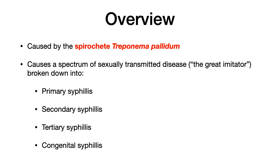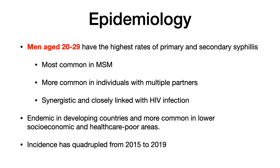Syphilis can be broken down into four different subtypes: primary syphilis, secondary syphilis, tertiary syphilis, and congenital syphilis. Men aged 20 to 29 have the highest rates of primary and secondary syphilis. Key risk factors to watch for on your exam include a male who has sex with other males, a patient with multiple sexual partners, and a history of HIV infection. Syphilis is synergistic and closely linked with HIV infections.